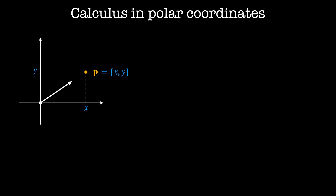It is a distance r from the origin and is at an angle theta with respect to the x-axis. So in polar coordinates, P is located at position (r, theta).